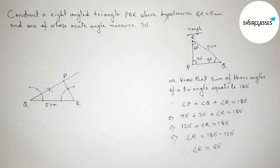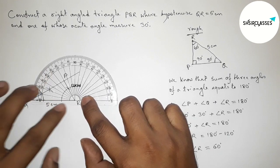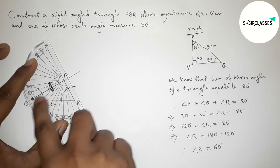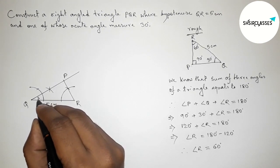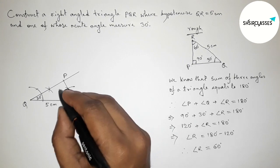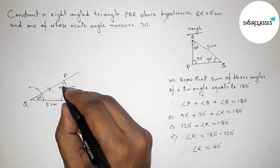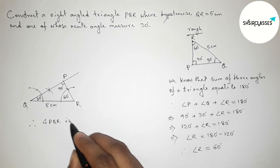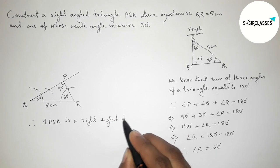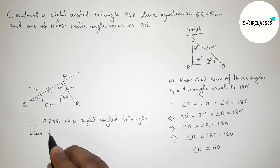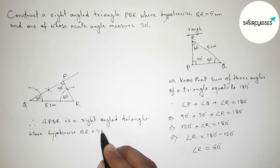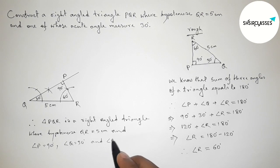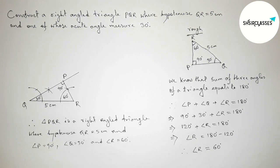Now checking angle Q with the protractor — this is perfectly a 30 degree angle. Checking angle R — this is perfectly a 60 degree angle. And angle P is perfectly 90 degrees. So triangle PQR is a right angled triangle where hypotenuse QR equals 5 centimeters, angle P equals 90 degrees, angle Q equals 30 degrees, and angle R equals 60 degrees. That's all, thanks for watching.